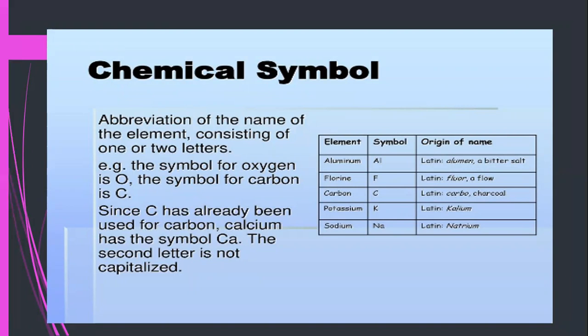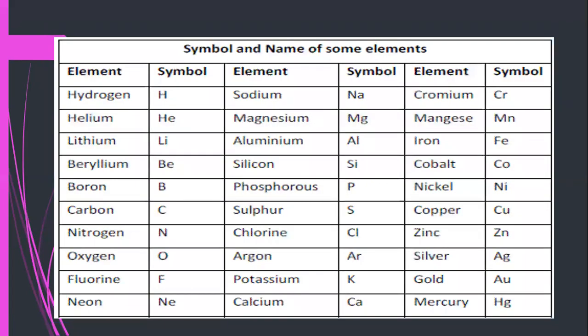Since C has already been used for carbon, if we need to make a symbol for calcium, we take C along with a and use the symbol Ca — the second letter is not capitalized. This is a key rule: if an alphabet has already been taken for one element's symbol, the next element must use a two-letter symbol. Capital C and small a gives us Ca for calcium.